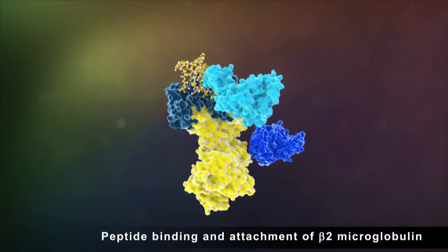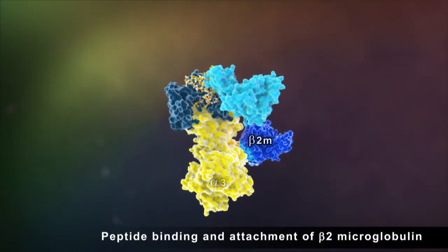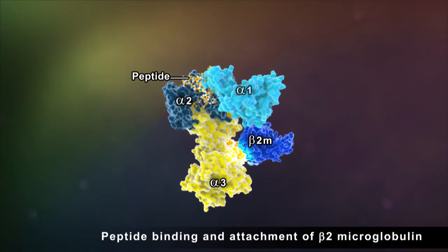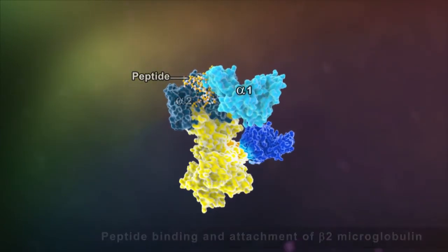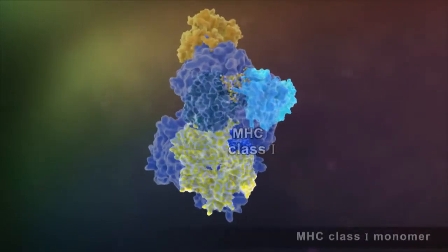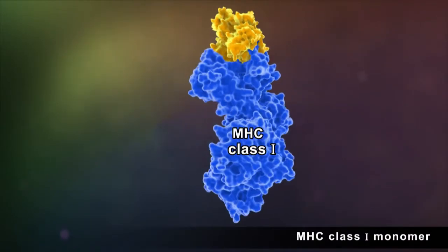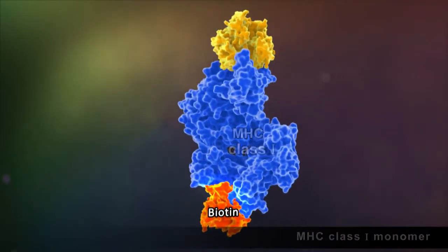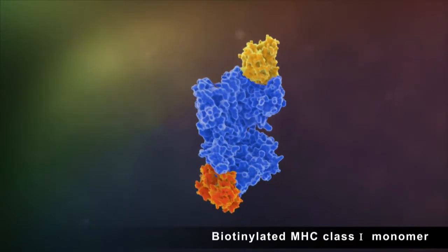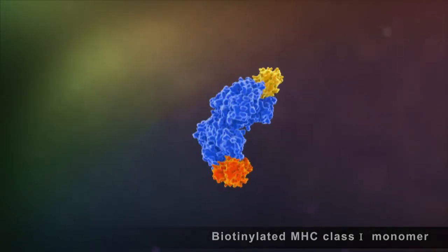First, recombinant MHC class I heavy chain and beta-2 microglobulin are refolded in the presence of a peptide antigen to generate a soluble monomeric MHC class I peptide complex. The monomer is then biotinylated by the biotin-ligase enzyme.